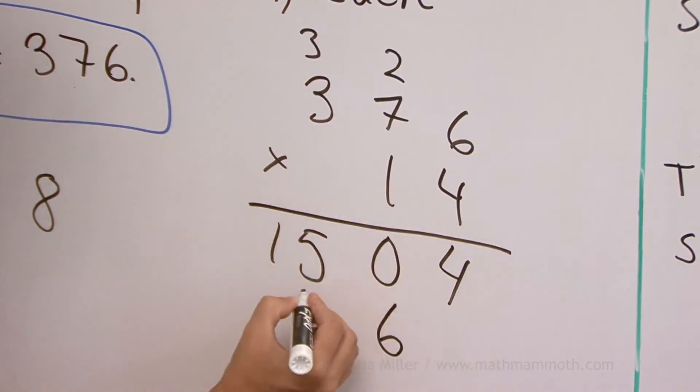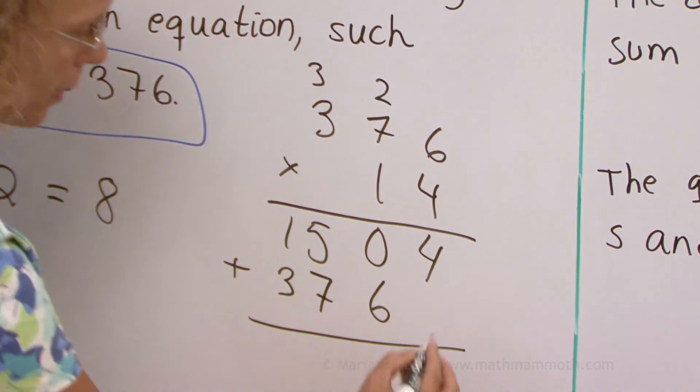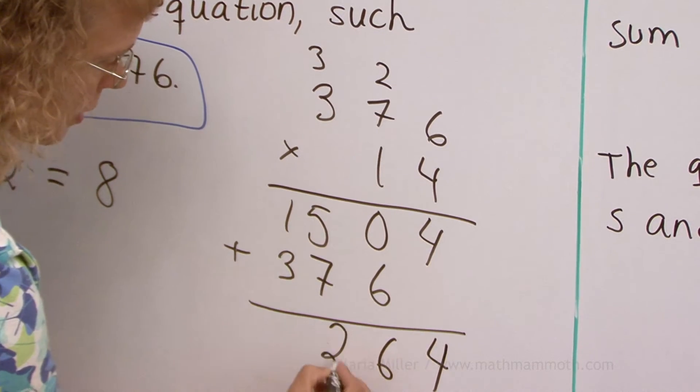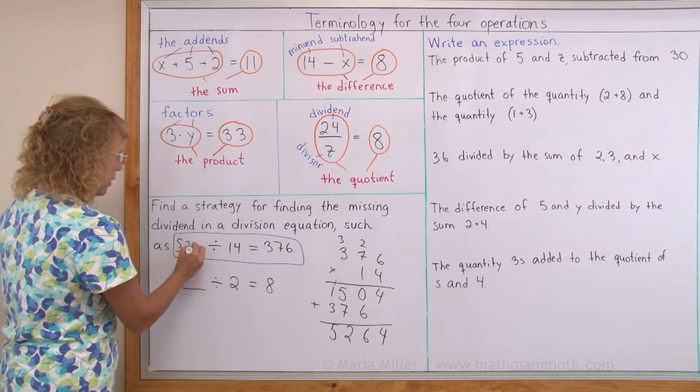And then 1 times 6, 1 times 7, 1 times 3. So, we get 4, 6, 12 and 5. 5,264.